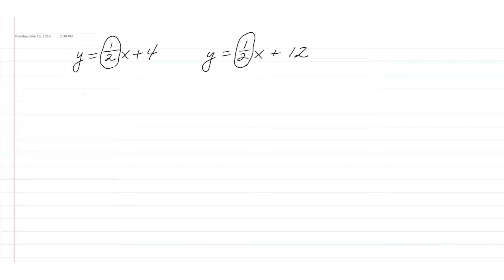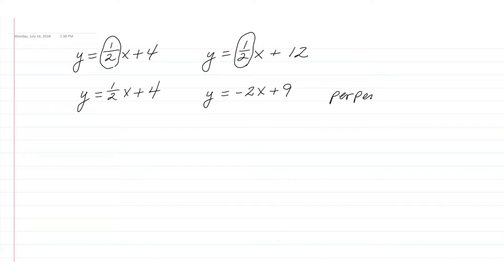What about perpendicular lines? Perpendicular lines have slopes that are negative reciprocals. So if we had a line whose slope was one-half, we'll use the example one-half x plus four — the line that is perpendicular to that will have the negative reciprocal slope. The negative reciprocal of one-half would be negative two over one, or just simply negative two. So these lines are perpendicular, and the first two lines were parallel.